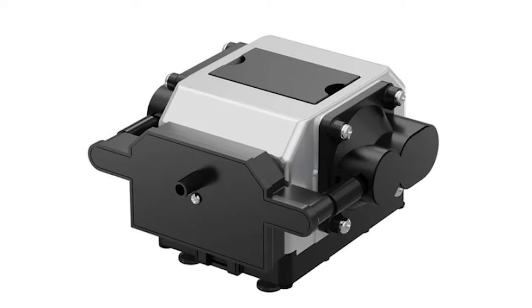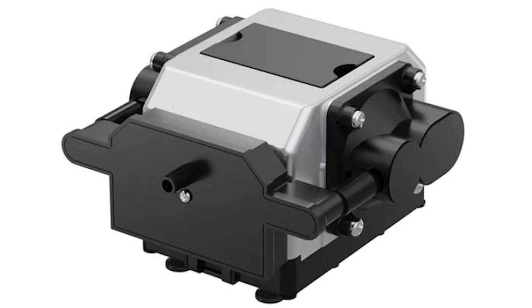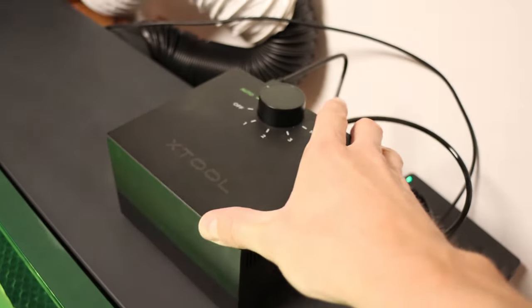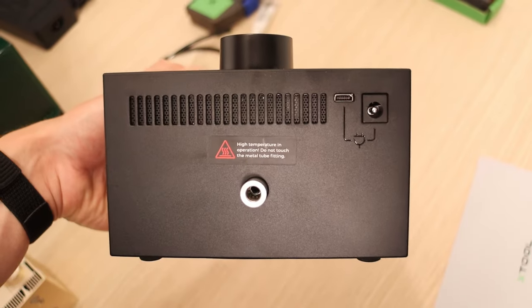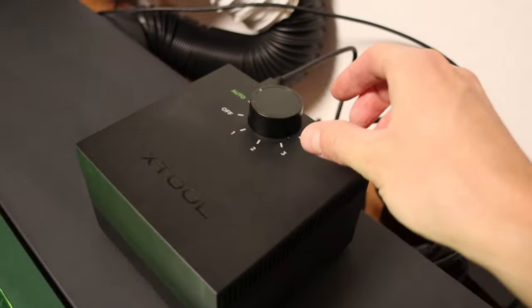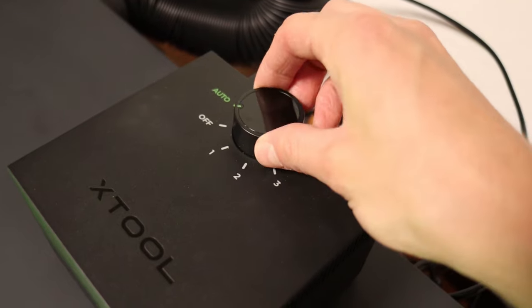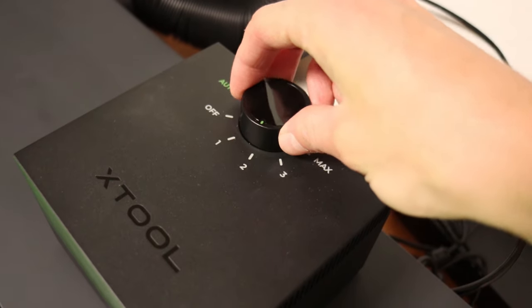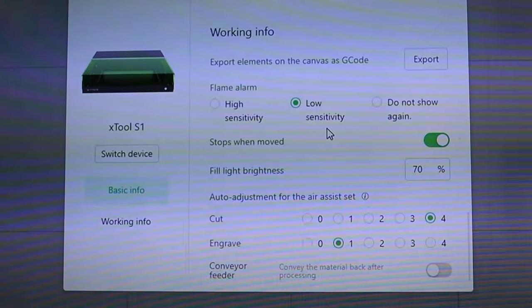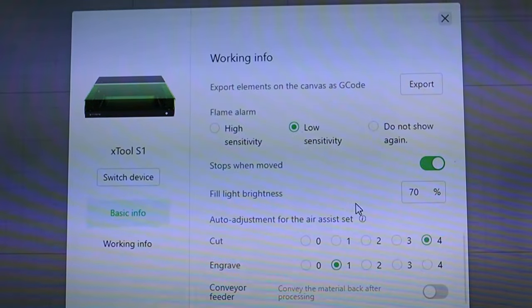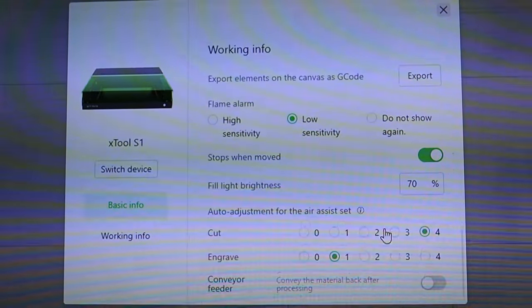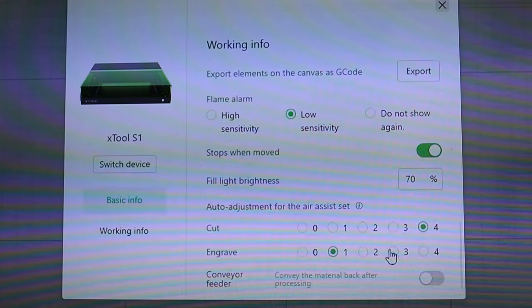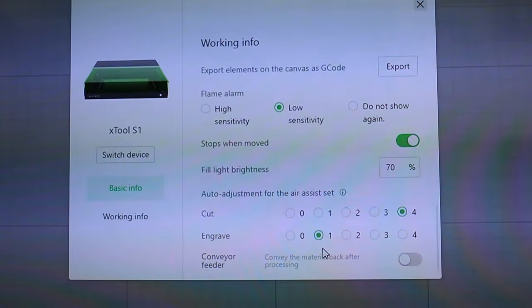The machine supports two different air assist types, the old one and the new one, which is what I have here. It is an automatic air assist which can also be manually controlled. In the X-Tool Creative Space software, you can individually set different air speeds for engraving and cutting process, so there is no need to worry about air assist control at all.